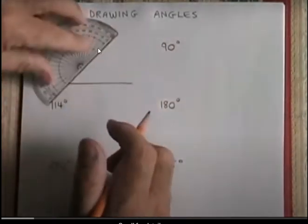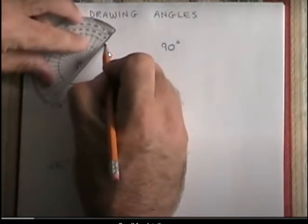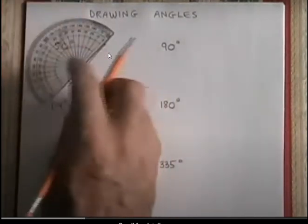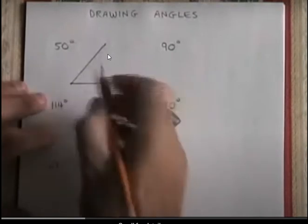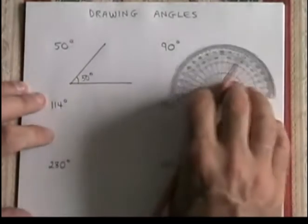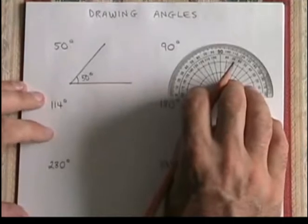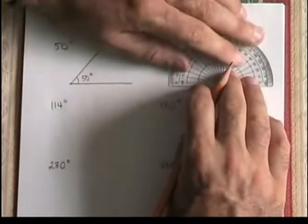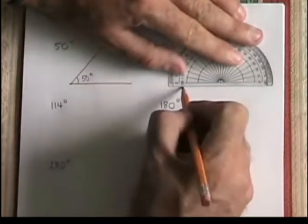Suppose 50 degree, mark then carefully join the dot. Mark it angle, write the value 50 degree, done.